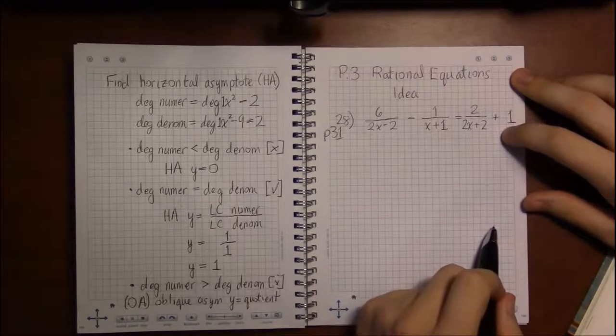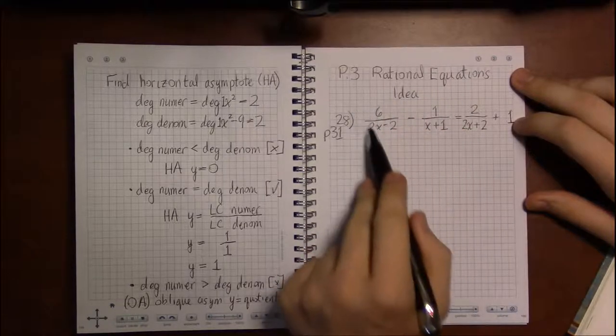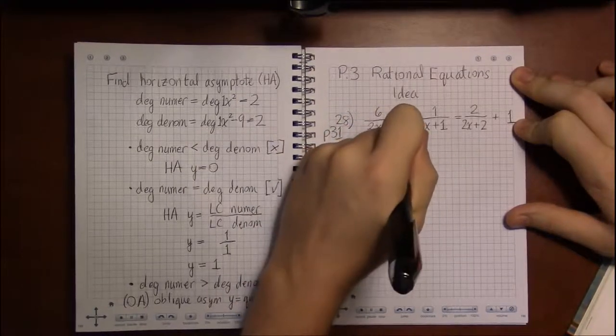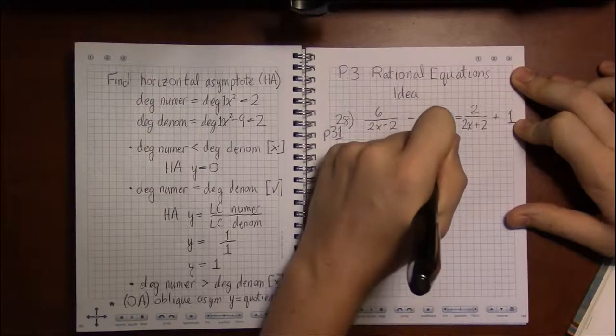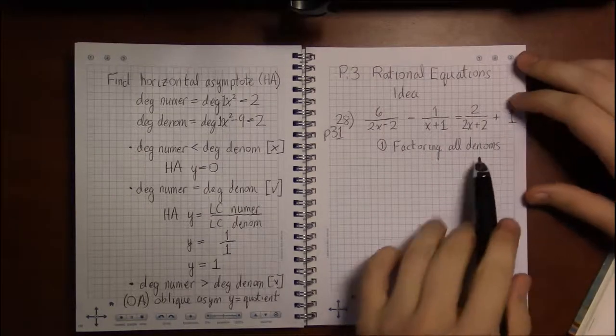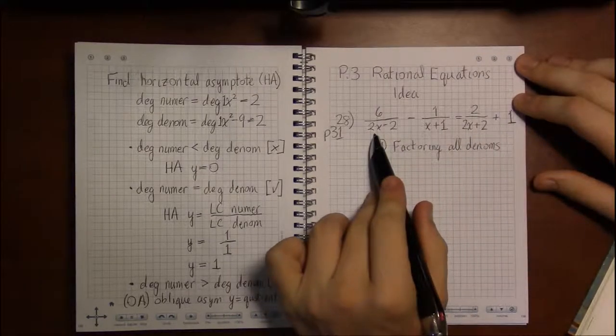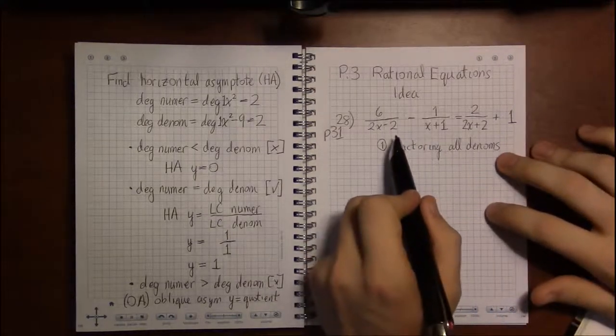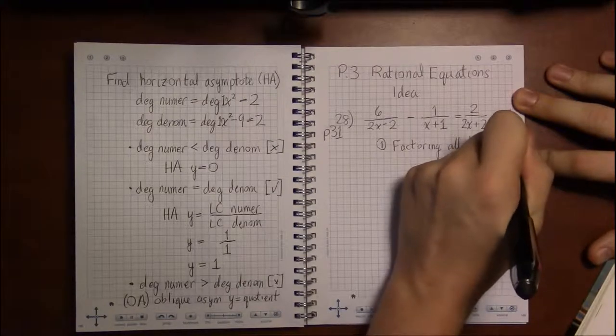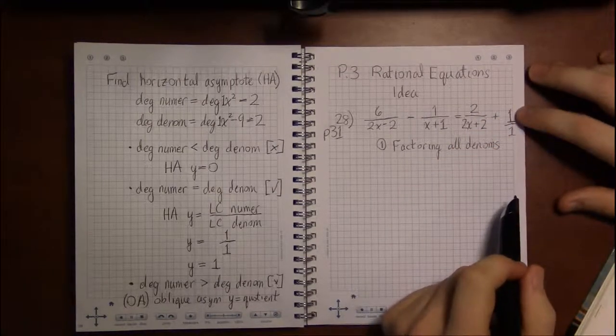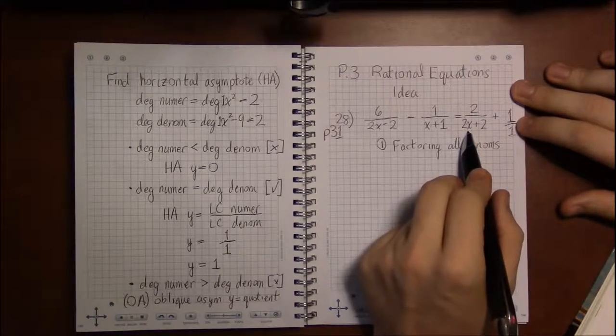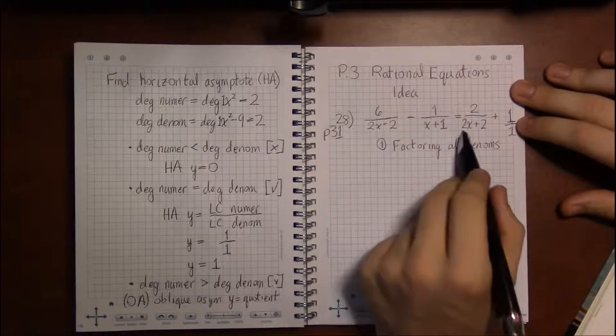So with rational equations, basically equations with fractions in them, that's a fancy way of saying that, we're going to start off by factoring the denominators. Because we're going to need to find a least common denominator to multiply by. But 2x minus 2 and 2x plus 2, things will get rather messy rather fast if we don't factor these out. We can factor a 2 out of both of them.